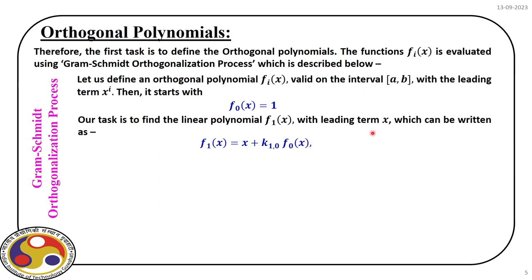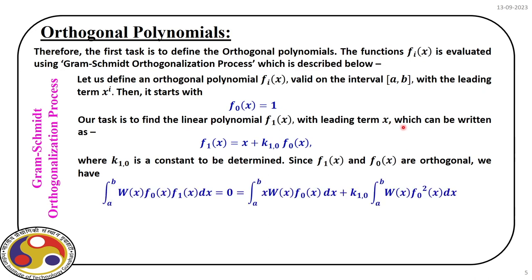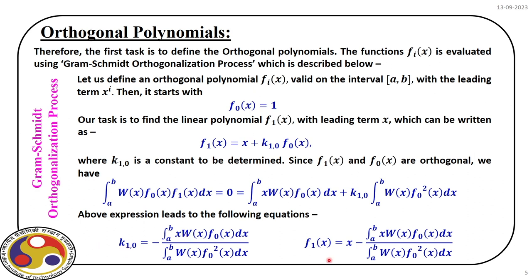Once we define this polynomial, our task is to determine the constant k₁₀. Because φ1 is orthogonal to φ0 with respect to the weight function, we have this expression defining orthogonality between φ0 and φ1. We can solve this expression to find k₁₀, which comes out in a compact form. The moment we define the weight function, we can evaluate k₁₀ and cast φ1(x) in terms of these coefficients.